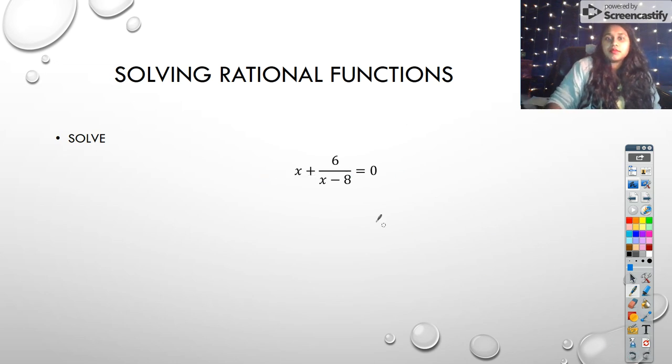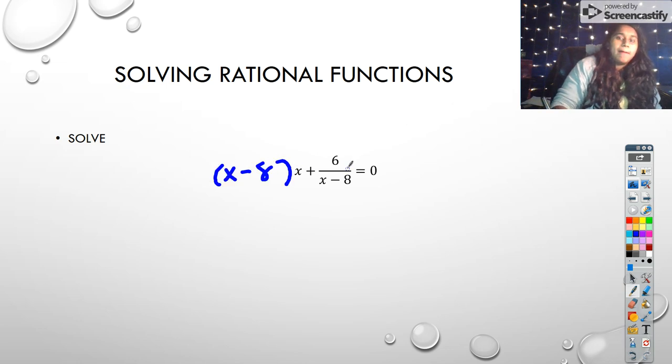So I would go ahead and multiply by x minus 8. But if I'm going to do it to one term, I've got to do it to all my terms. So I'm also going to multiply this portion by x minus 8, and I'm also going to multiply my right side by x minus 8.